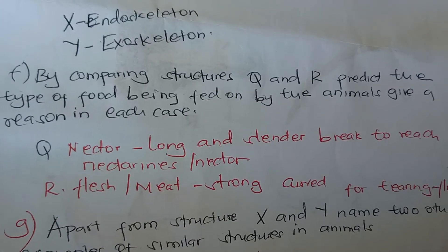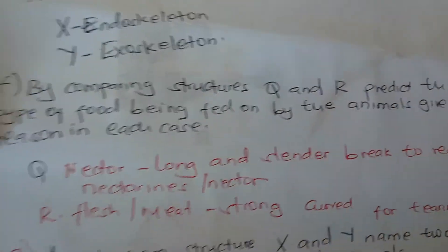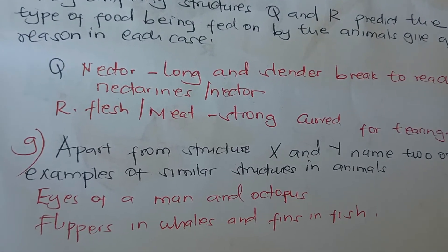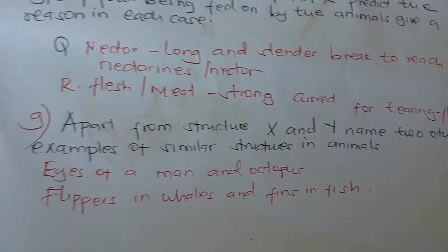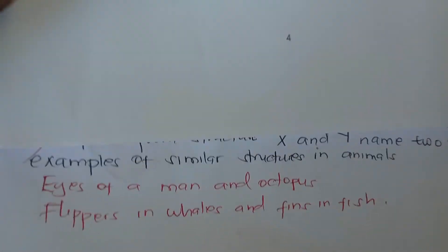By comparing structures Q and R, structure Q has a long slender beak and feeds on nectar — the long slender beak allows it to reach the nectar. Structure R has a curved beak and feeds on flesh, as the curved beak is strong for tearing flesh apart.